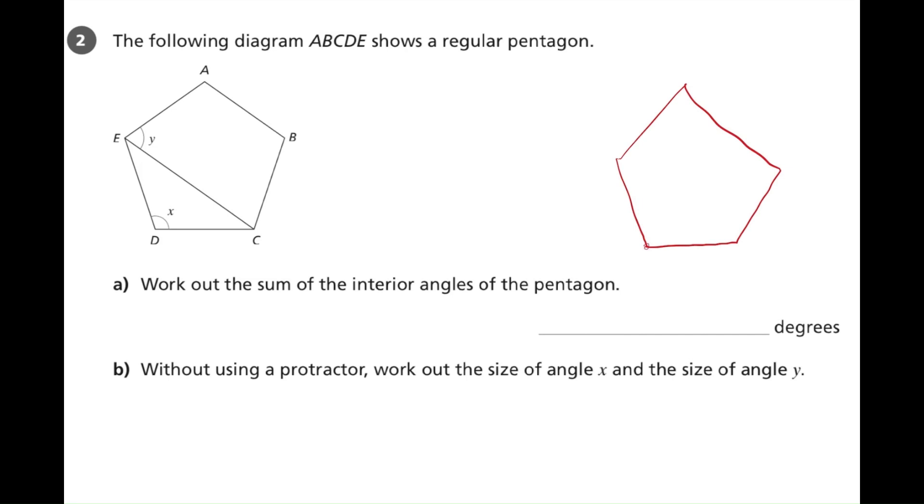If we go to one corner and join to each other corner in the pentagon, you can see that the pentagon is cut into three triangles. If we look at all the angles inside the three triangles and find their total, it will give us the sum of all five interior angles in the pentagon.